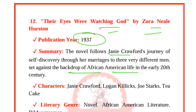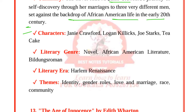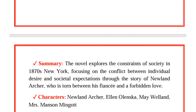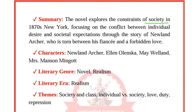Their Eyes Were Watching God by Zora Neale Hurston was published in 1937. The novel follows Janie Crawford's journey of self-discovery through her marriages to three very different men, set against the backdrop of African-American life in the early 20th century. Characters are Janie Crawford, Logan Killicks, Joe Starks, and Tea Cake. The genre is African-American literature and Bildungsroman. It belongs to the Harlem Renaissance. Themes are identity, gender roles, love, marriage, race, and community.